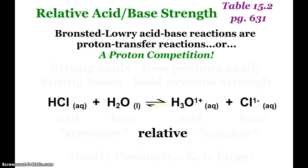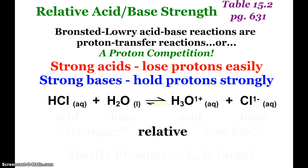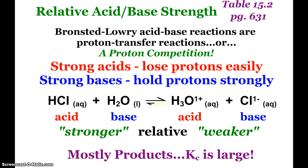So let's take a look at relative acid-base strength. And there's a good table in your book on page 631. And it's basically a ranking order of our acids and bases. Because when you look at Bronsted-Lowry reactions as a proton transfer reaction, you can look at it as a proton competition. Strong acids will lose their protons easily. Strong bases hold their protons strongly. And so here we see hydrochloric acid versus water. We know that hydrochloric acid is one of our strong acids. And when I look at this in general, that means water is acting as the base here. On the other side, hydronium is the acid. Chloride is the ion, is the base. And so relative to each other, the hydrochloric acid and water are stronger than the hydronium and chloride ions. They are weaker.